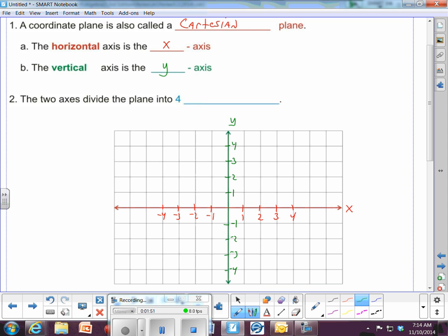Alright, you can see that the two axes divide the plane into four regions, and these regions are called quadrants.